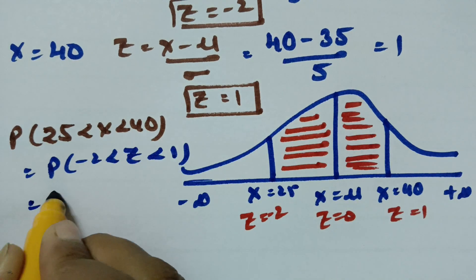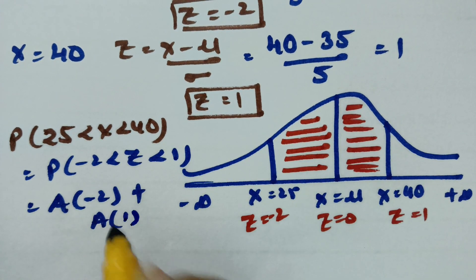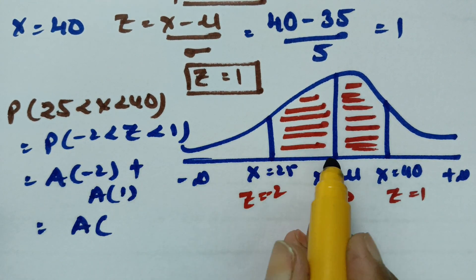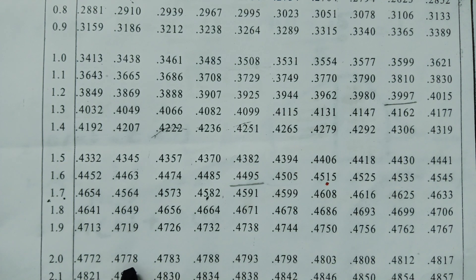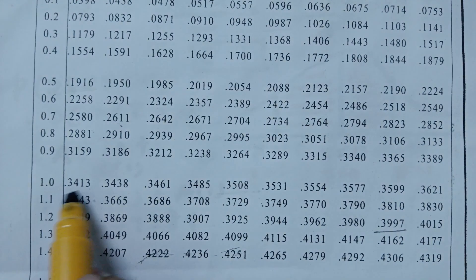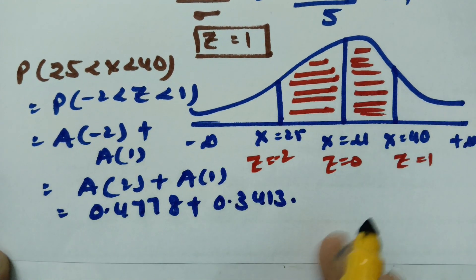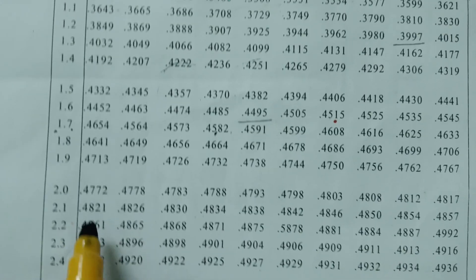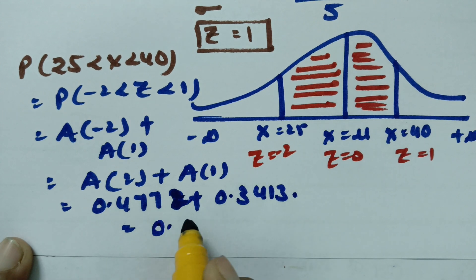This area equals area from -2 to 0 plus area from 0 to 1. By symmetry, area from -2 to 0 equals area from 0 to 2, which is 0.4778 from the table. Area from 0 to 1 is 0.3413. Adding: 0.4778 + 0.3413 = 0.8191, approximately 0.8185.